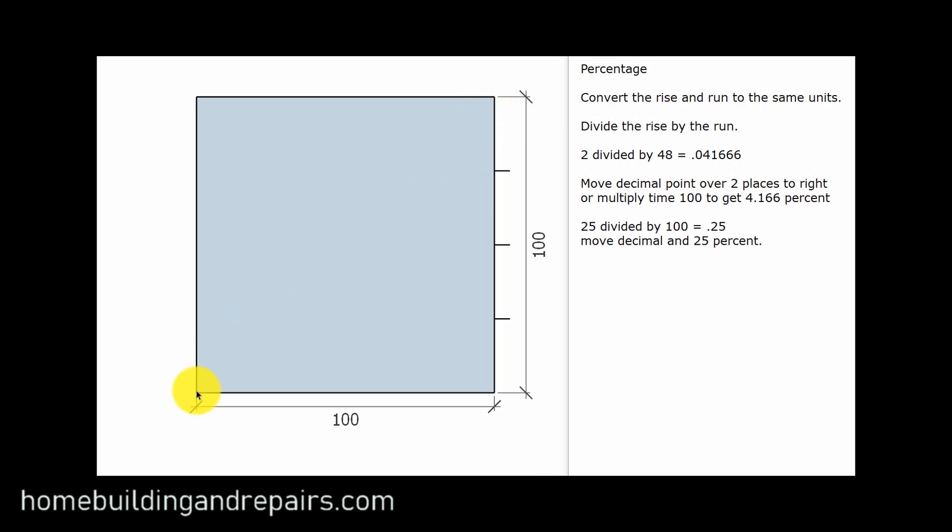But a 100 percent slope is going to be a 45 degree angle. So this is where the ratio would be 1 to 1. For every 1 unit you go over, it goes up 1 unit. So if you went over 100 units, it would go up 100 units. So that would give you a 1 to 1 ratio.